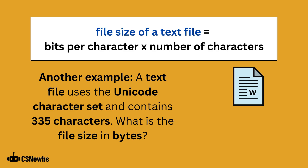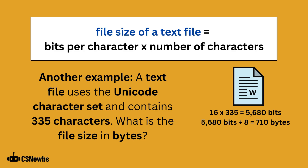Let's look at another example. A text file uses the Unicode character set and contains 335 characters. What is the file size in bytes? Unicode uses 16 bits per character, so 16 multiplied by 335 gives 5680 bits. Divide this by 8 to give your answer in bytes, which is 710.